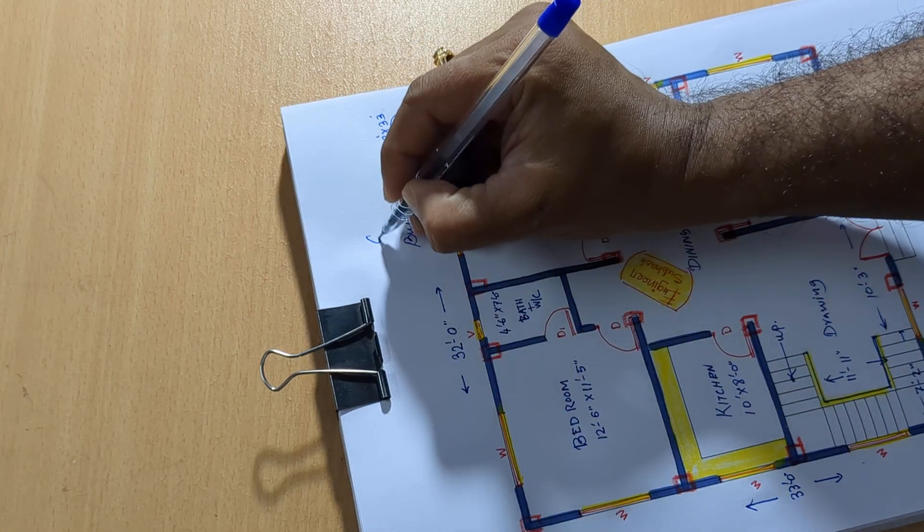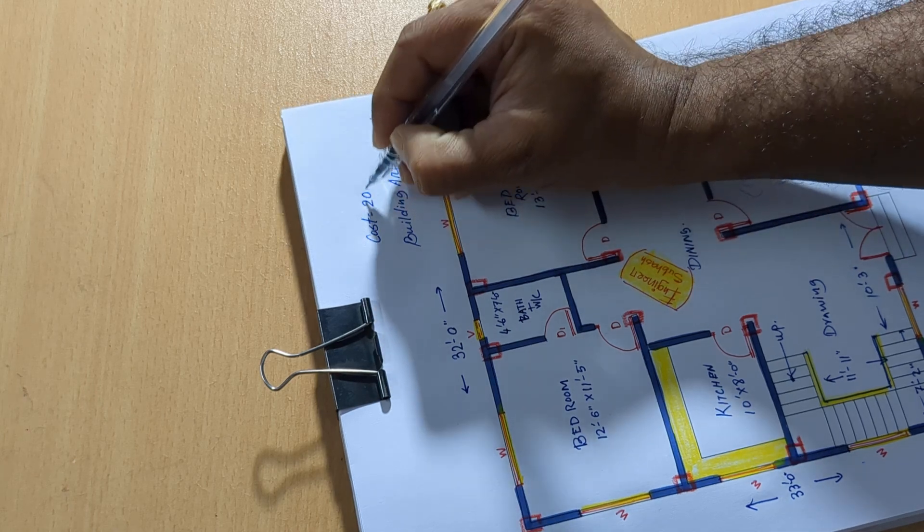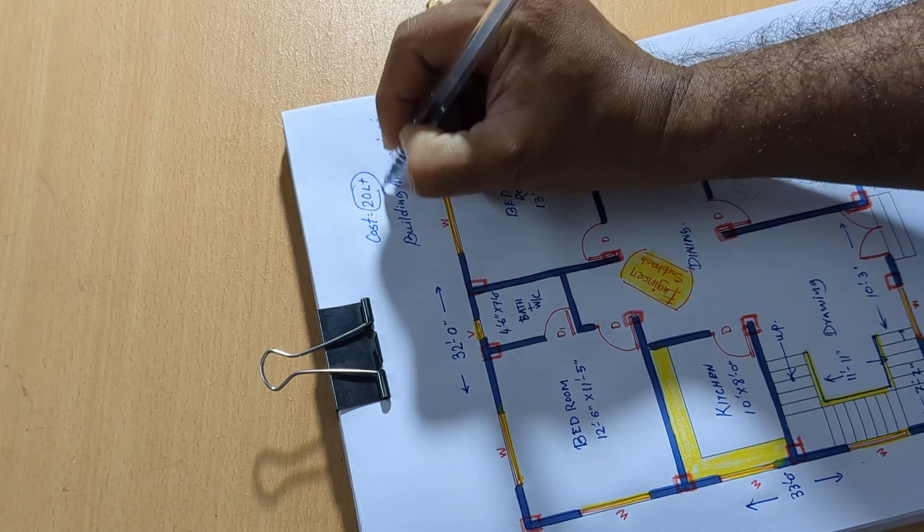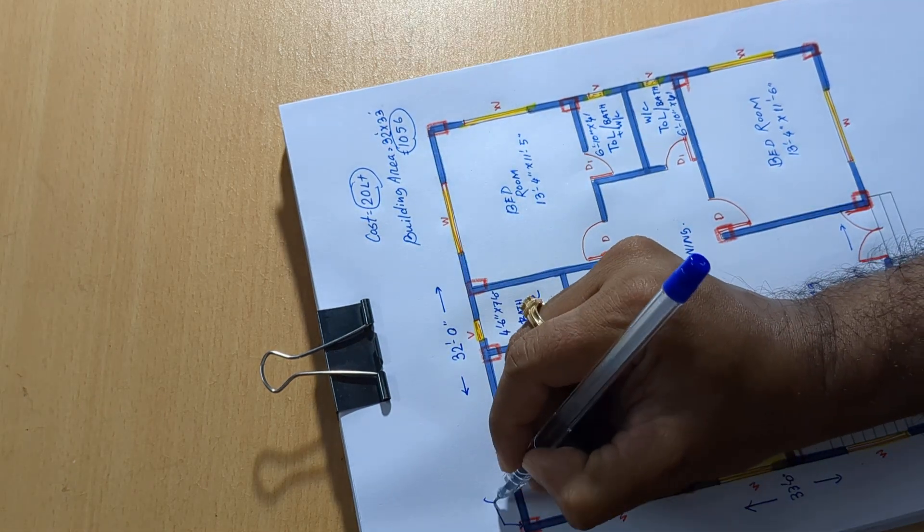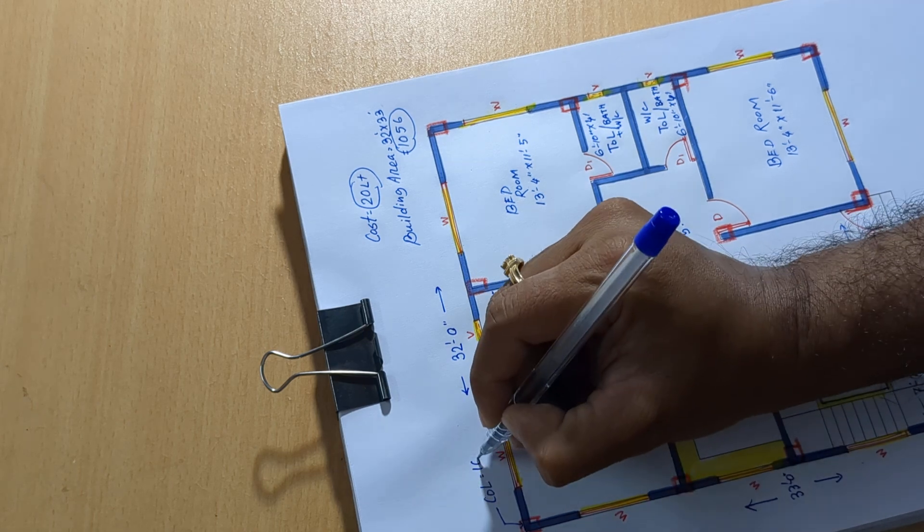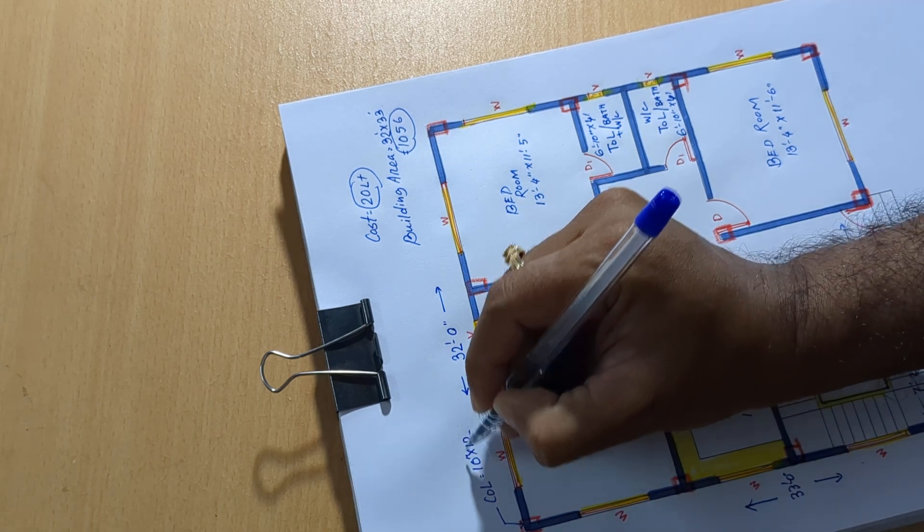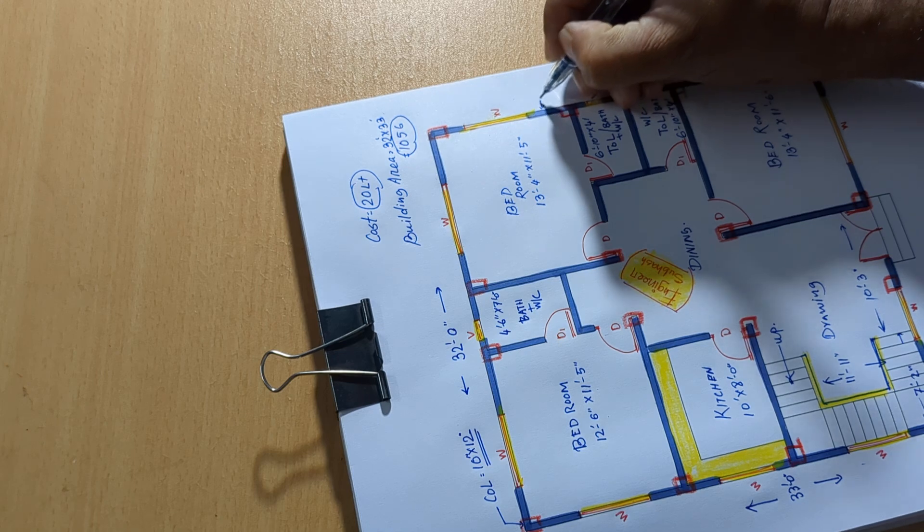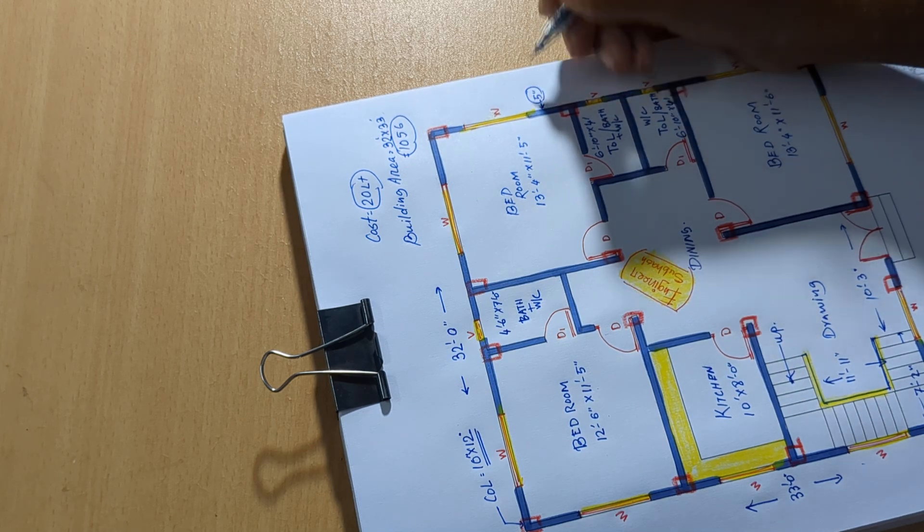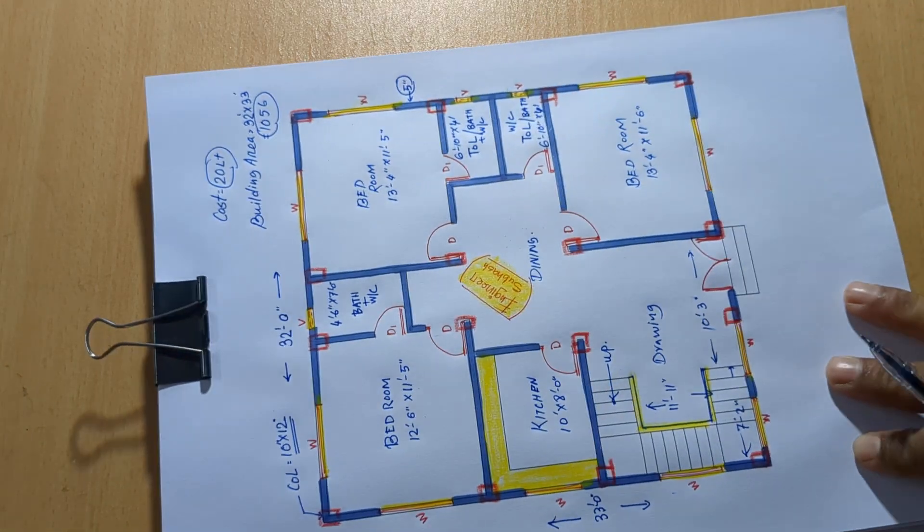Building cost: 20 lakh plus. Column 12 inch, wall 5 inch. If you like this whole design,